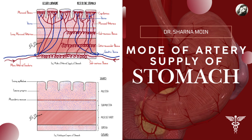Hi everyone, this is Dr. Sharna Muin and welcome back to my channel. I hope you all are doing good. Previously we showed you the arterial supply of the stomach and the venous drainage of the stomach, but in today's video we will discuss about the mode of arterial supply of the stomach. At the end of the video we will also explain why gastric ulcers tend to form more commonly on the lesser curvature and its relationship with the mode of arterial supply. You have to watch the full video till the end without skipping any part.